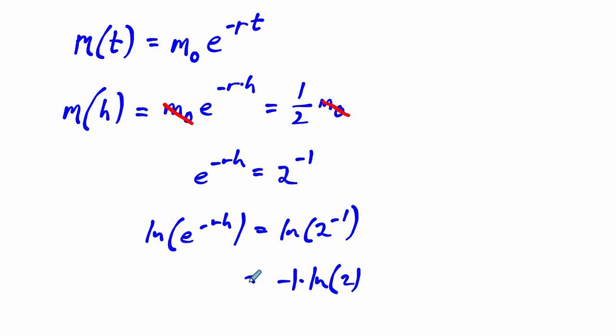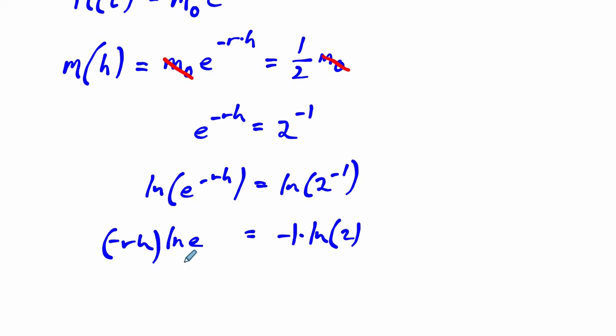And I get this statement right here: negative rh times the natural log of e. The natural log of e is just 1, so this is negative rh equals negative 1 times the natural log of 2.